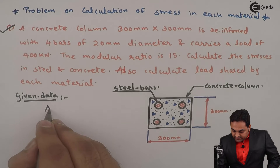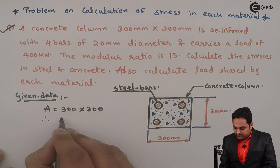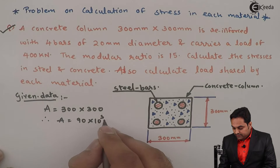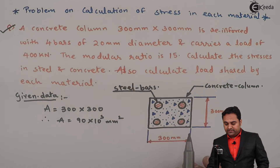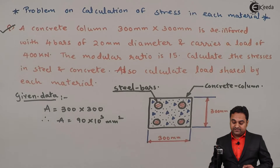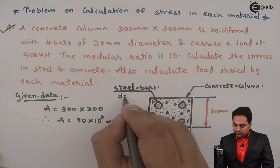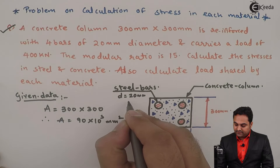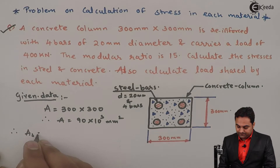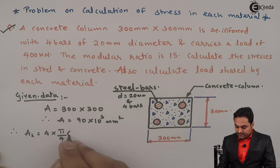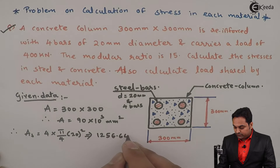The area of the column is the total area, so I write capital A as the total area. It is 300 mm × 300 mm, which gives 90 × 10³ mm². From this figure, I will calculate the area of steel. Since there are four bars of 20 mm diameter, the area of steel is 4 × (π/4) × 20², which gives 1256.64 mm².